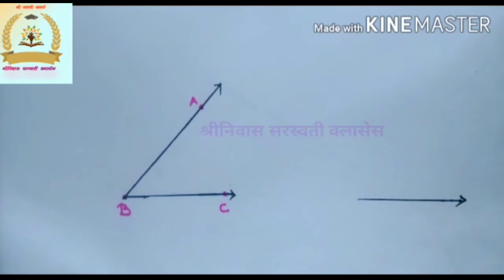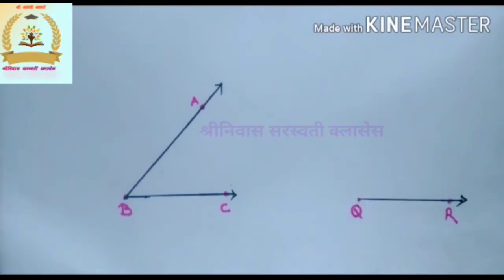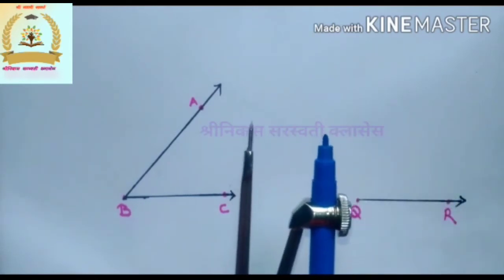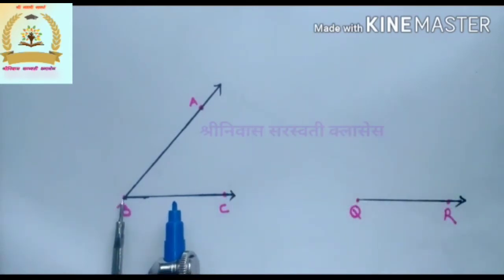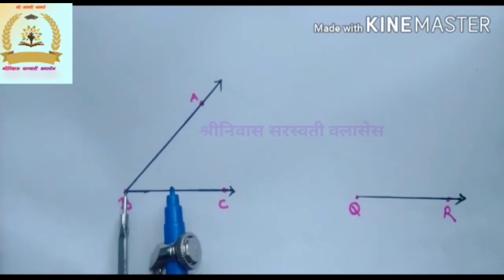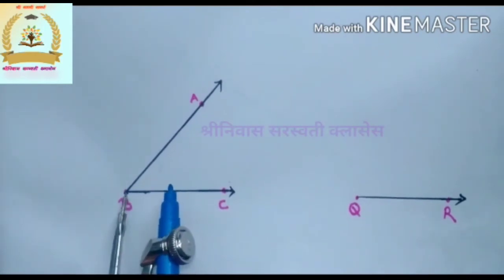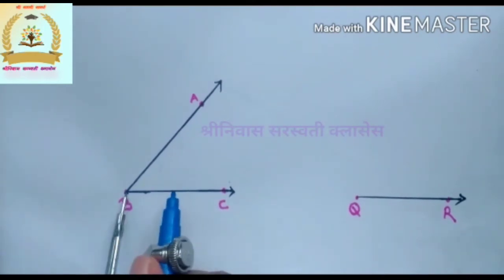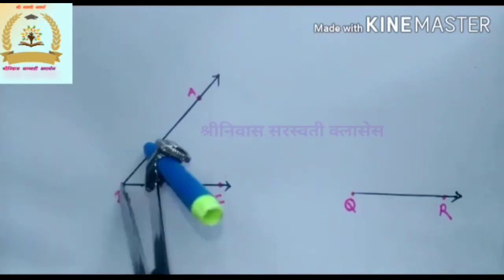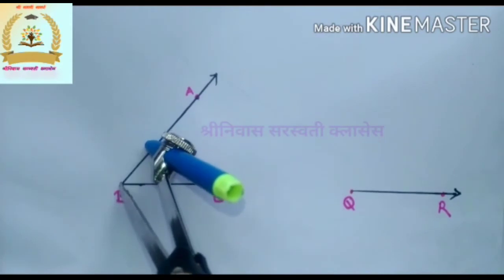Draw a ray QR. Now place the compass point at vertex B of angle ABC and, taking a convenient distance, draw an arc to cut the rays BA and BC at points D and E respectively.